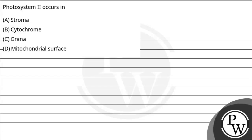Hello guys, let's read this question. The question says: Photosystem II occurs in — Option 1st is stroma, Option 2nd is cytochrome, Option 3rd is grana, Option 4th is mitochondrial surface.